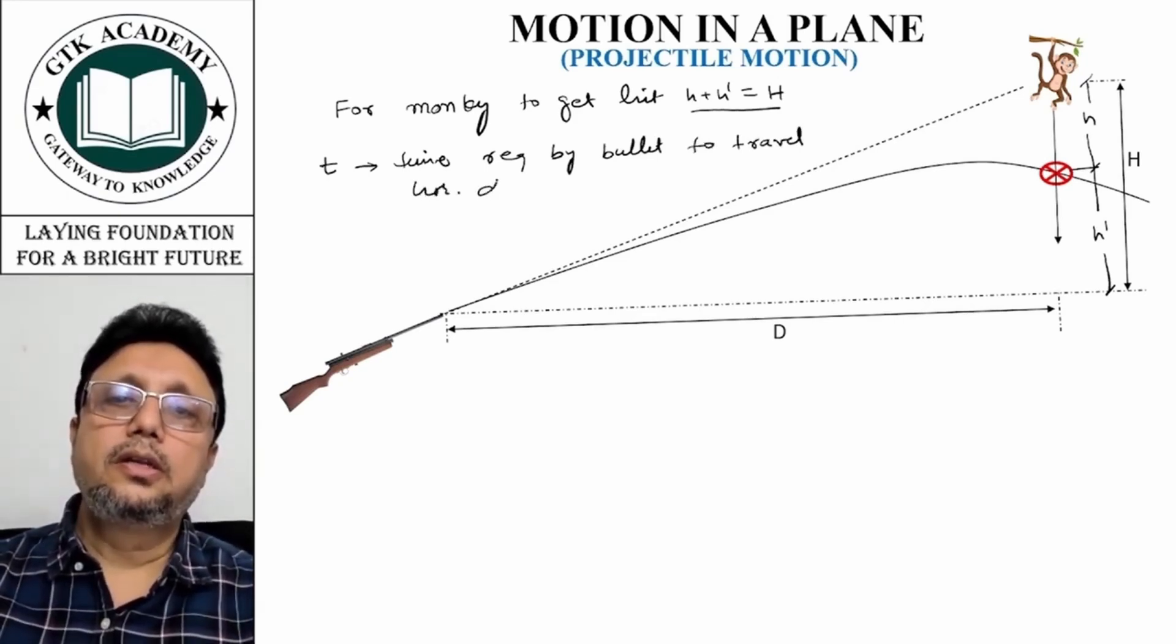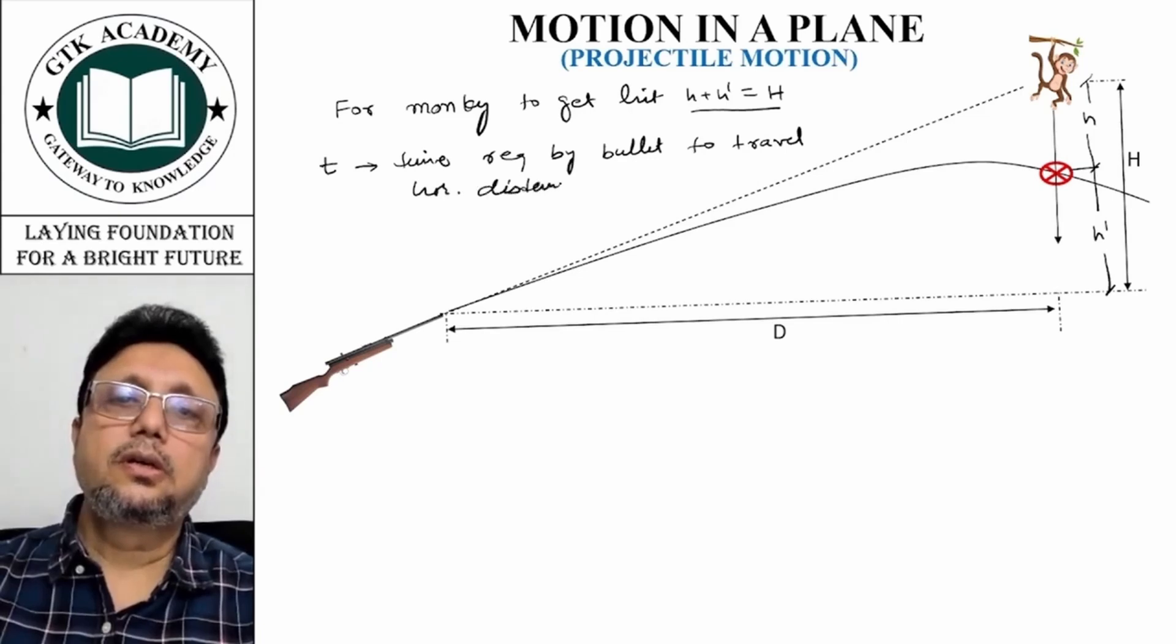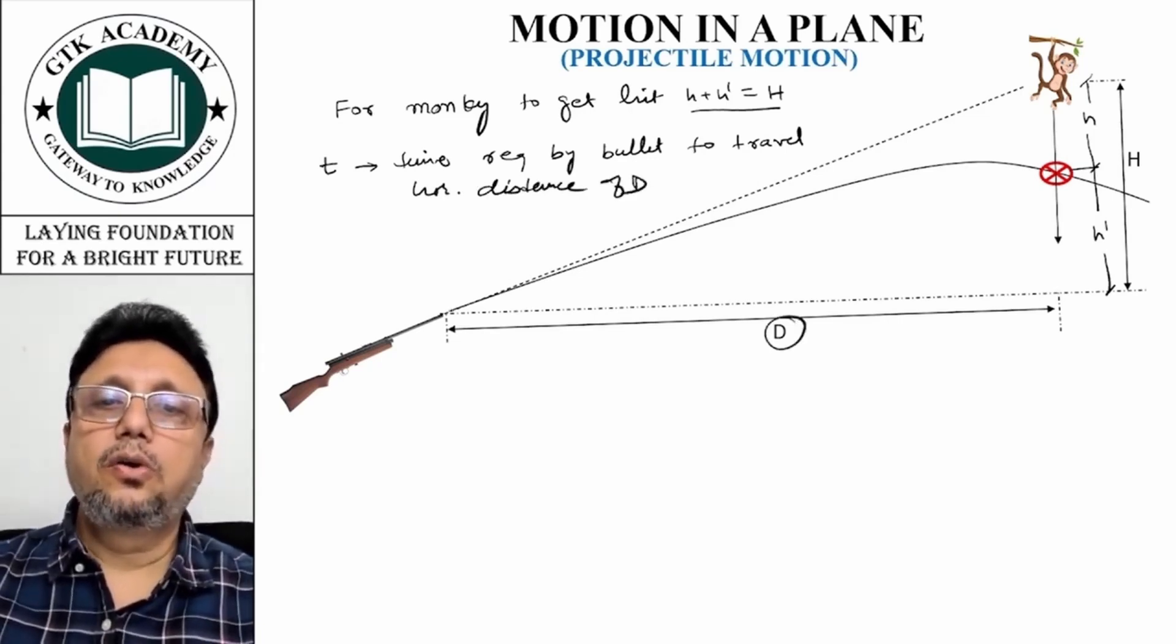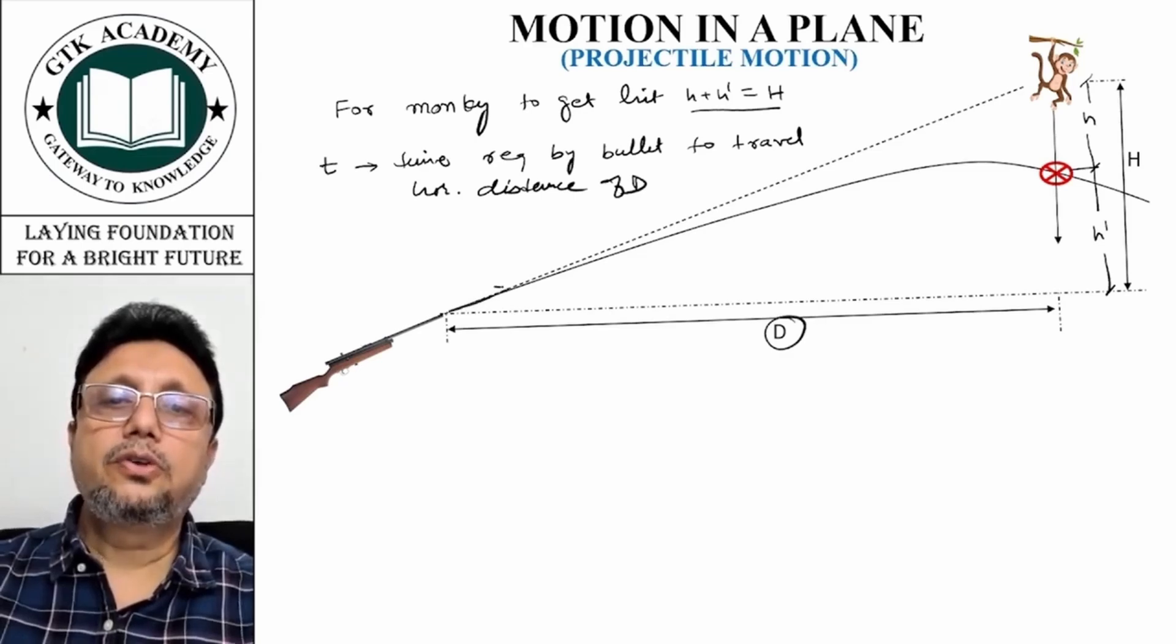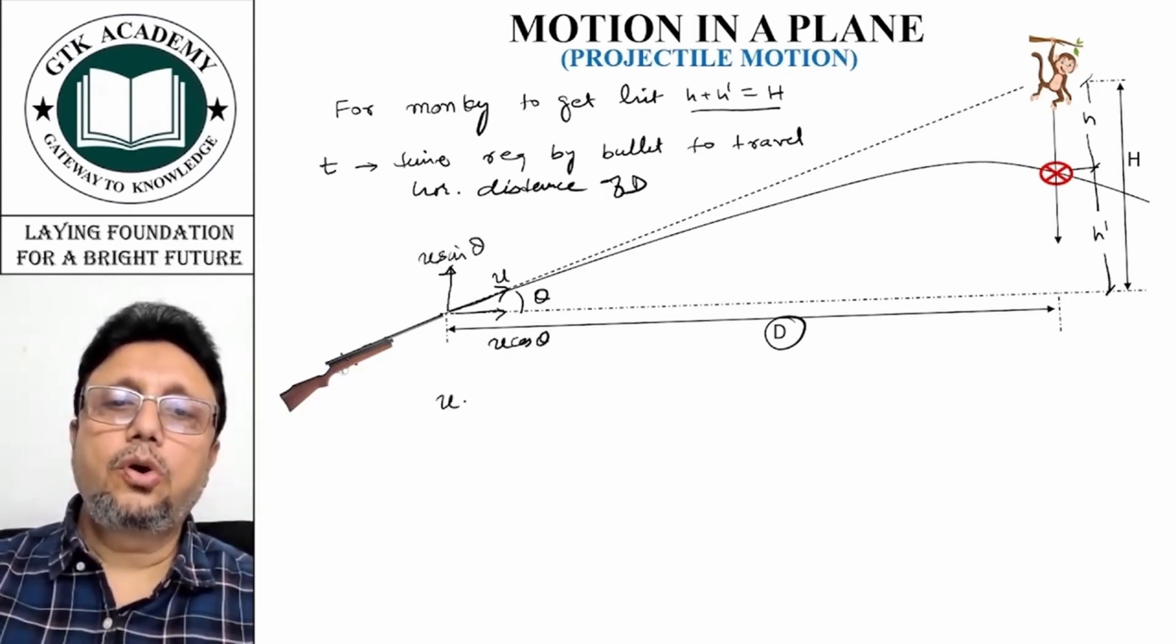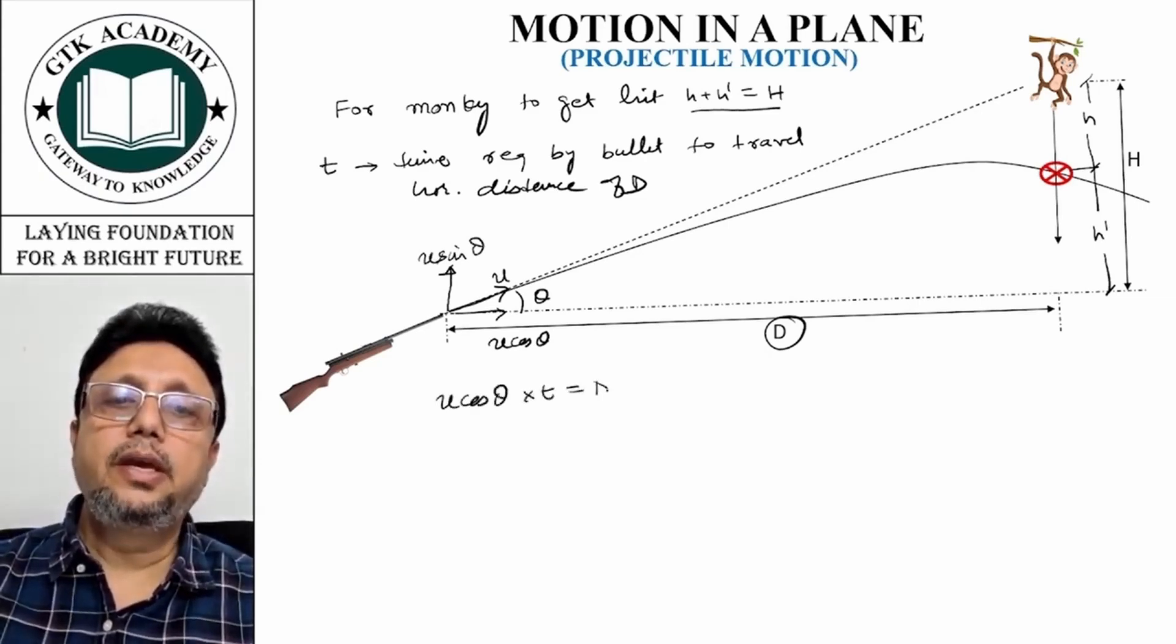If the velocity of the shot is u and this angle is theta, you have u cos theta and u sine theta. That means u cos theta into t should be equal to d. So t is equal to d upon u cos theta. This is equation 1.